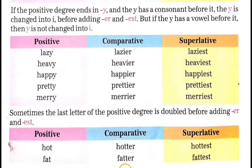If the positive degree ends in -y and the y has a consonant before it, the y is changed into i before adding -er and -est. But if the y has a vowel before it, then y is not changed into i. यदि positive degree के end में y होता है और y के पहले consonant होता है, तब er और est add करने से पहले y को i में change कर दिया जाता है. लेकिन यदि y के पहले कोई vowel हो, तब y को i में change नहीं किया जाता है.